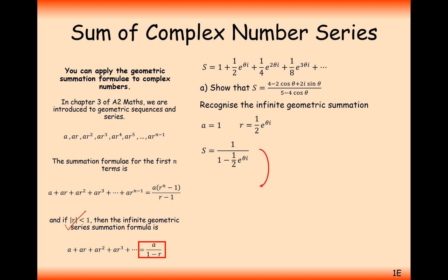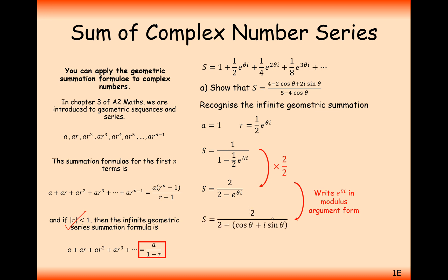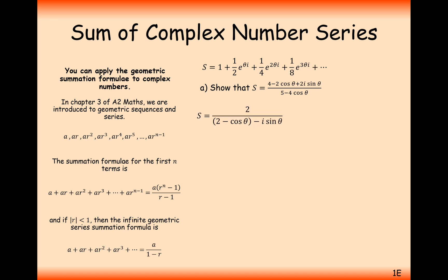The first thing to do is multiply top and bottom by 2 to avoid triple-tiered fractions, giving us 2 over (2 minus e^(iθ)). Next we need to turn it into something trigonometric, so we rewrite the exponential form of the complex number in modulus-argument form: 2 over (2 minus (cos θ + i sin θ)). Then we reorganize the brackets to group together the real parts and the imaginary parts.